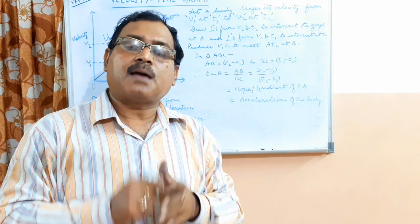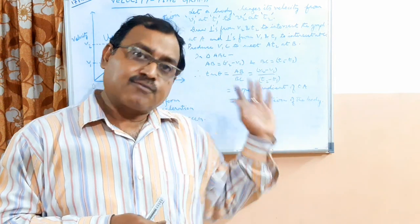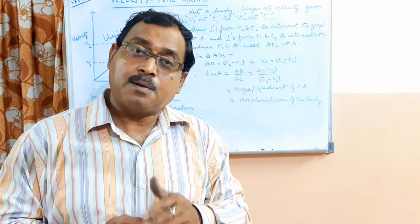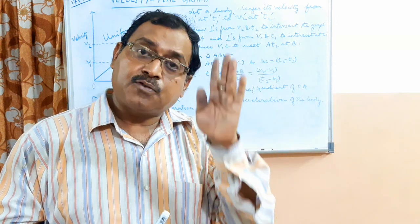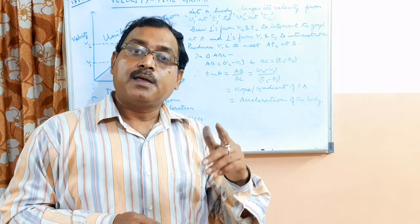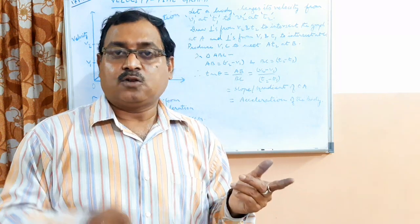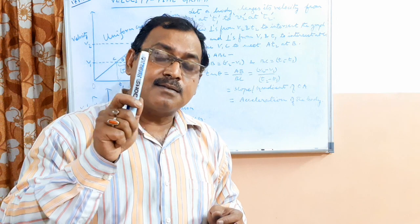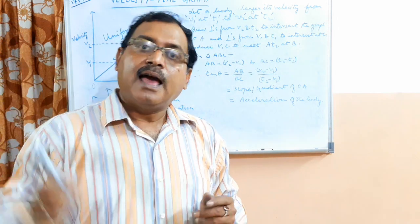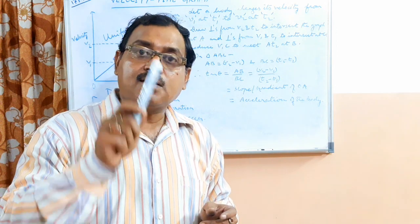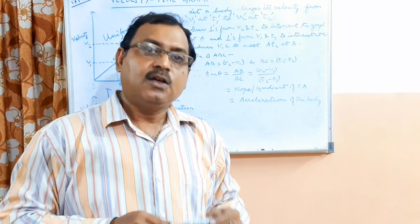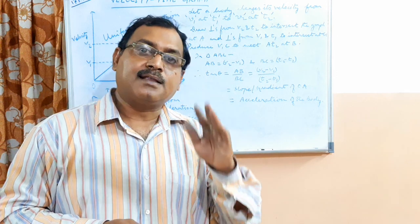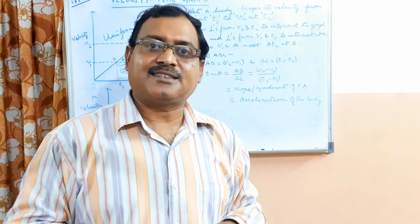A lot of objective-type questions are based on these five points. After this, we will go to the derivation of the three equations of motion — the ones we already did algebraically. The first equation is V = U + AT, the second is S = UT + ½AT², and the third is V² = U² + 2AS. We will derive these three equations of motion by the graphical method in our next class. Thank you.